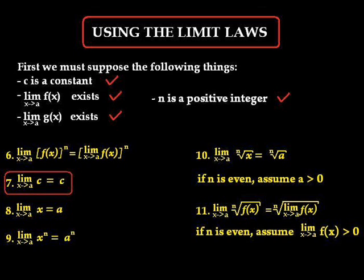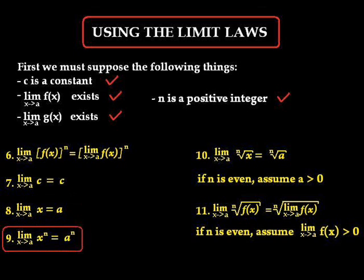Seven: the limit as x approaches a of a constant is equal to the constant itself. Eight: the limit as x approaches a of x is equal to a, since x will become a. Nine: the limit as x approaches a of x to the n is equal to a to the n.